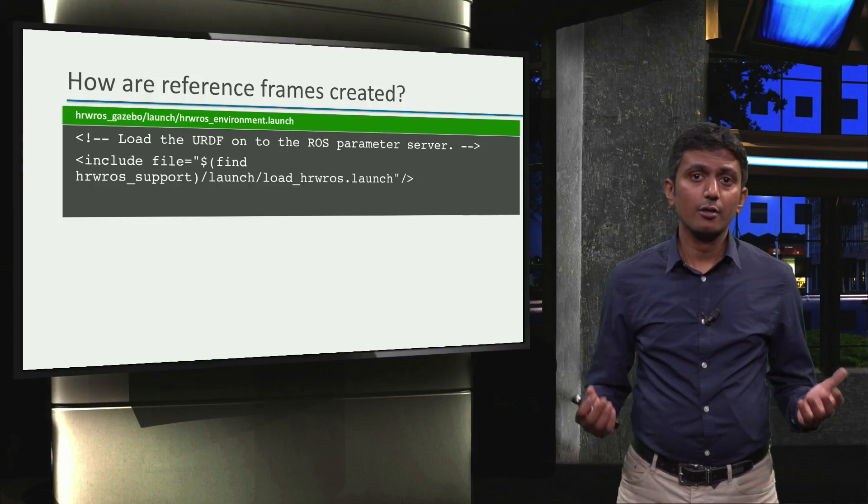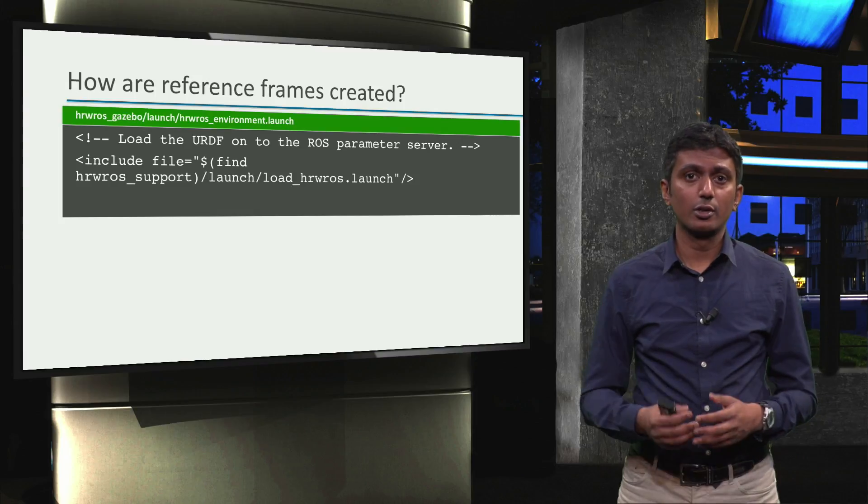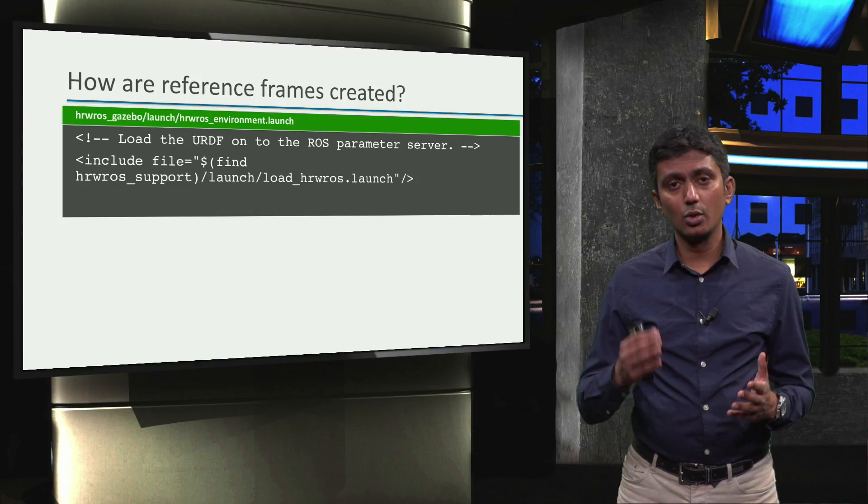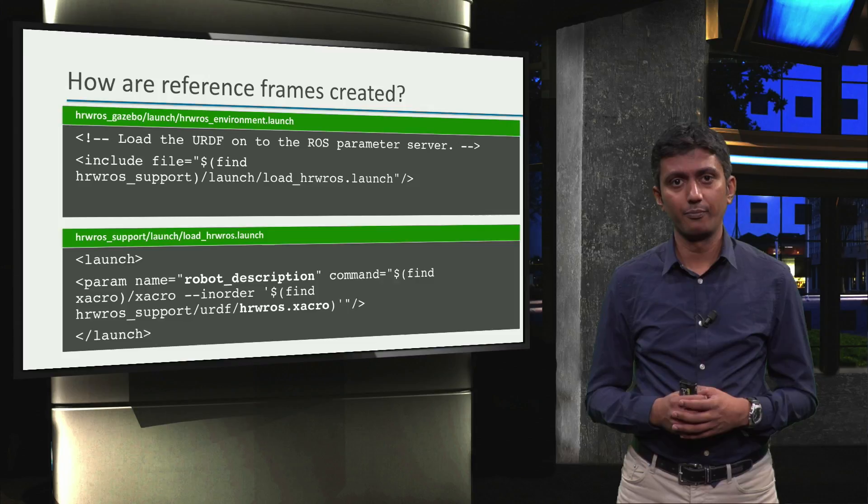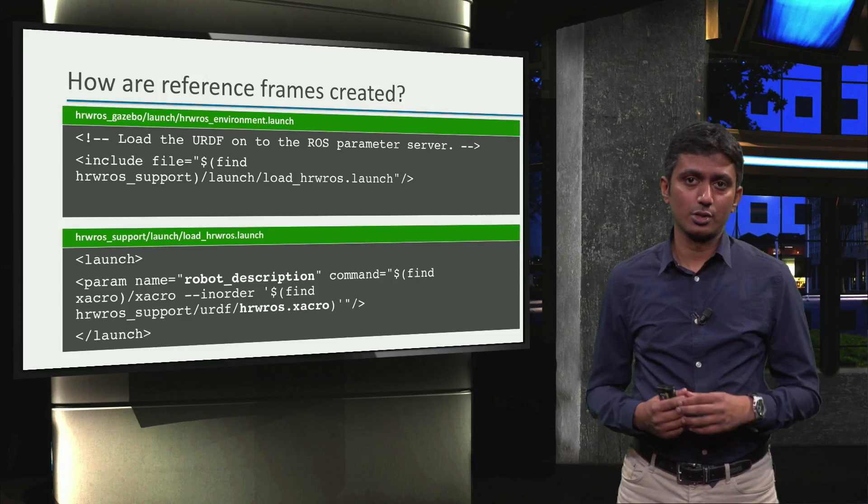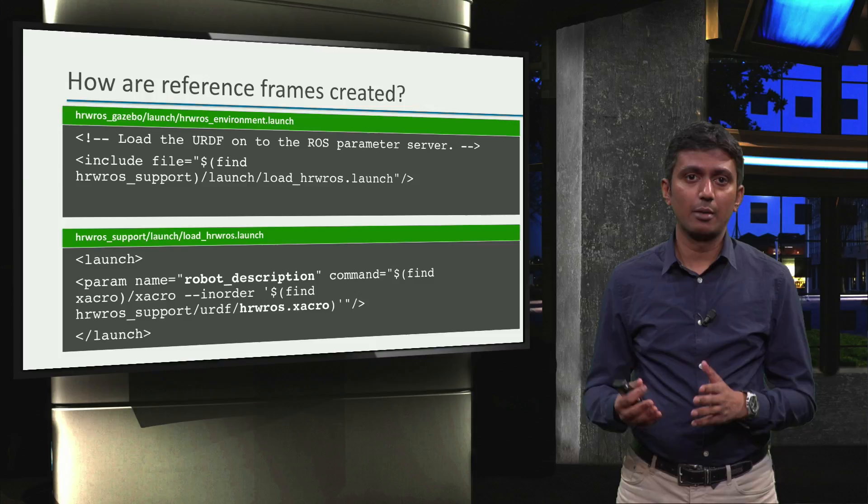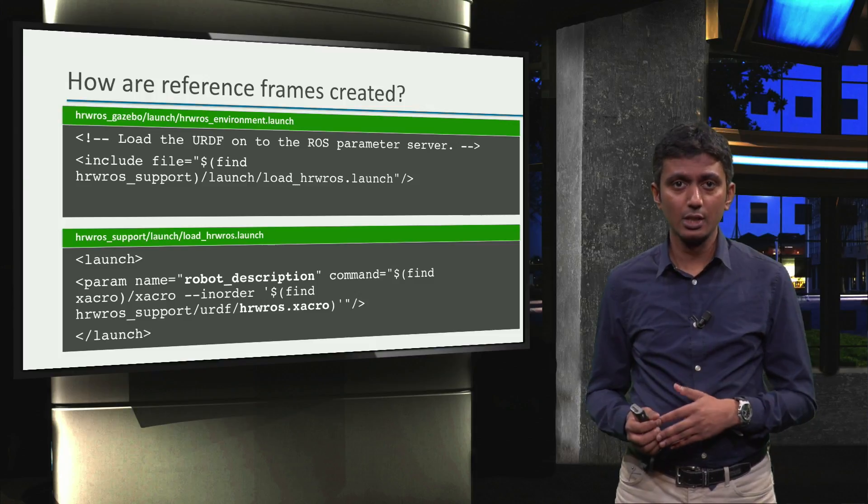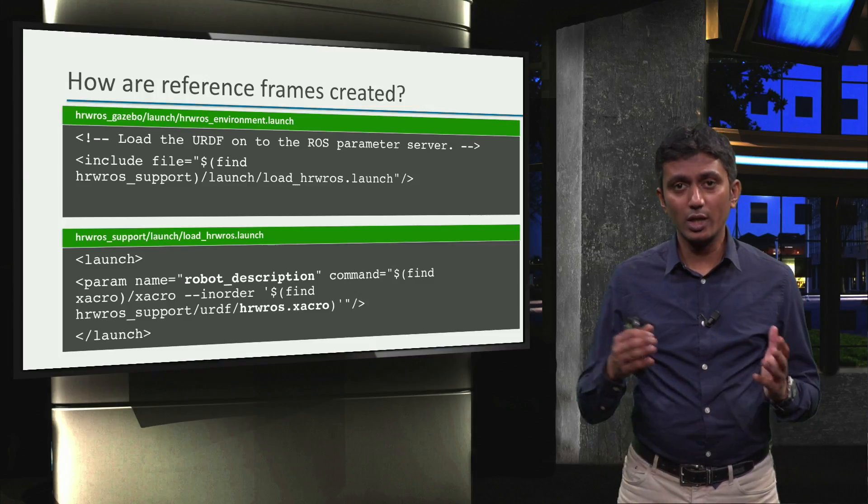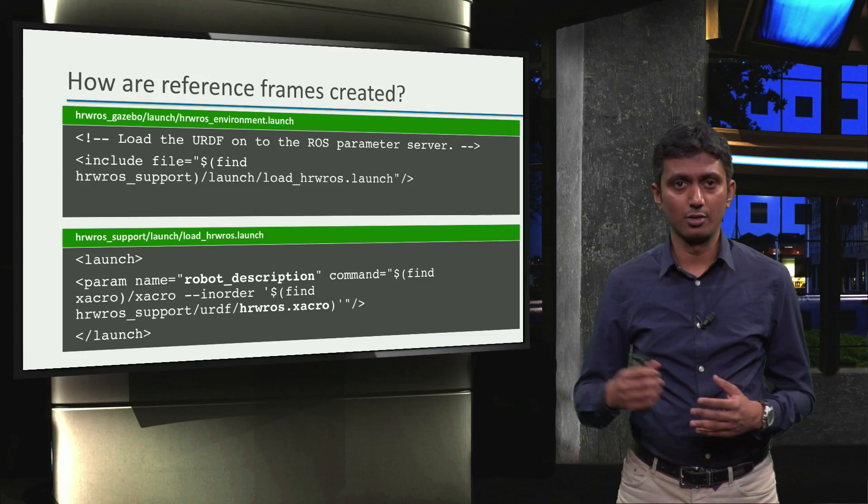We load the URDF onto the parameter server via the load_hrwros.launch file. And in the load_hrwros.launch file, we have the parameter robot_description that gets updated with the URDF elements via the hrwros.xacro file.